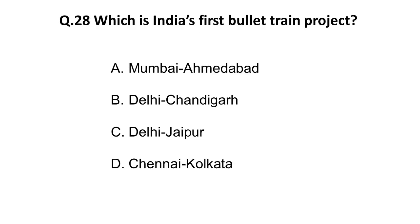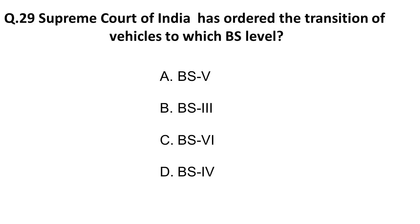Question 28: Which is India's first bullet train project? Options: A) Mumbai to Ahmedabad, B) Delhi to Chandigarh, C) Delhi to Jaipur, D) Chennai to Kolkata. The correct answer is A: the first bullet train project is Mumbai to Ahmedabad.